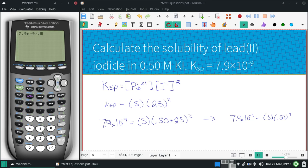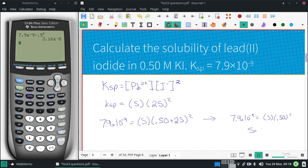Divided by 0.5 squared, we'd have an s of 3.16 times 10 to the negative eighth, or s equals 3.2 times 10 to the negative eighth. And that is significantly smaller than that 0.5, so that would be a safe assumption to make.